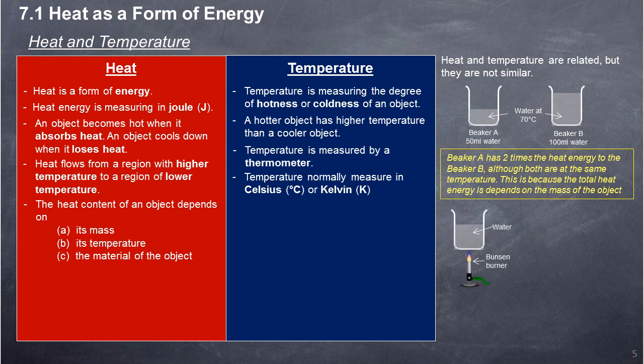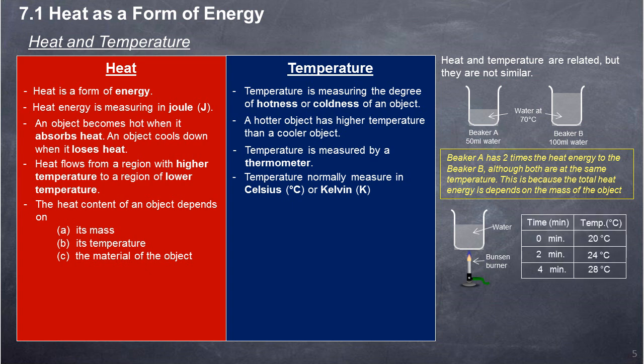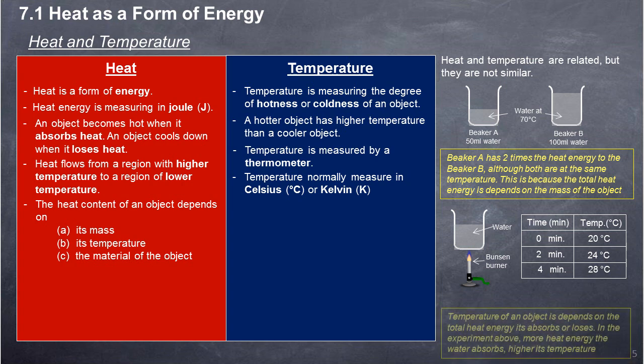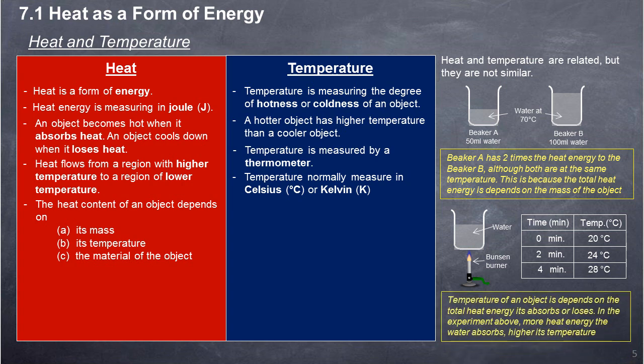When a beaker containing water is heated by a Bunsen burner, its temperature at different times is recorded in a table. The temperature of an object depends on the total heat energy it absorbs or loses. In the experiment, the more heat energy the water absorbs, the higher its temperature.